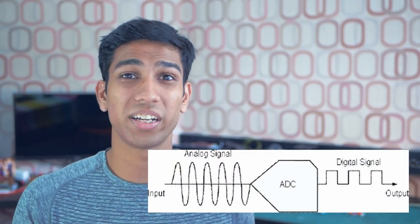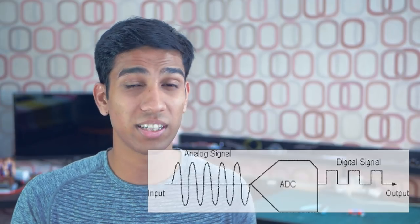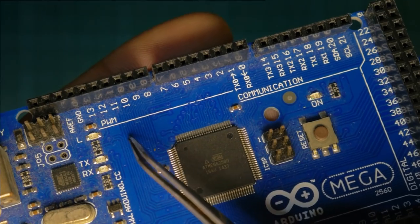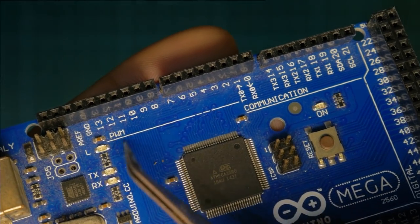That means if you want to connect any analog electronics or analog sensors into your Raspberry Pi, you need to use an external analog-to-digital converter. Additionally, the Raspberry Pi only has one or two hardware PWM pins, which is far fewer than your average Arduino board.